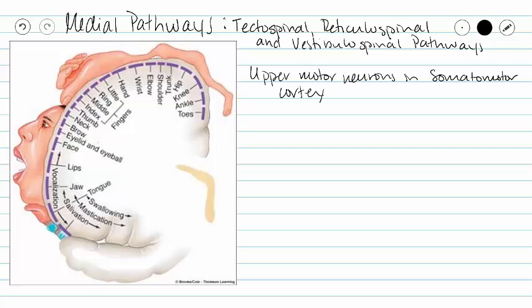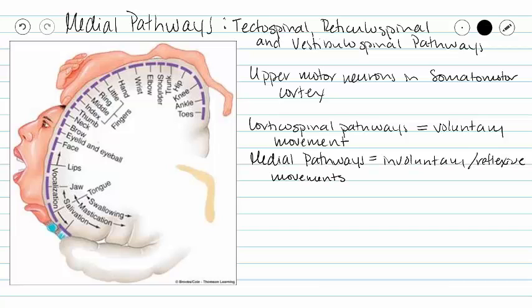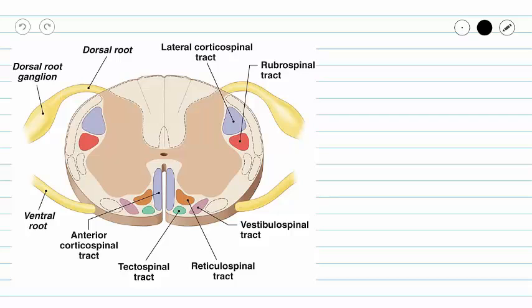The difference between our corticospinal pathways and our medial pathways is whether or not the movement is voluntary or under conscious control. Our medial pathways, on the other hand, are going to control involuntary or reflexive movements. So we may be using the same upper motor neurons, but they are initiated for a different reason. Our upper motor neuron cell bodies are located in our somatomotor cortex, and our lower motor neuron cell bodies are going to be in our anterior gray horn.